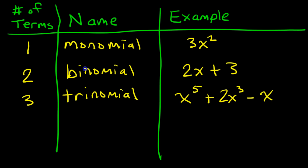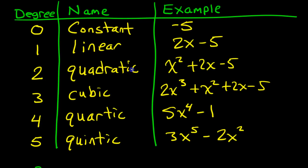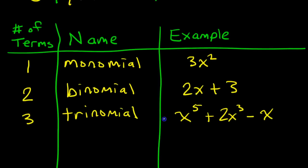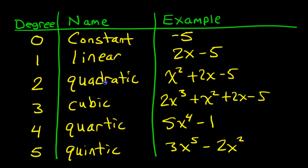By the way, you can put these names together. We talked about names according to degree, and we talked about names according to the number of terms. So this is a monomial, but because the degree is 2, I could call it a quadratic monomial. This is a trinomial, so this is a quadratic trinomial. This is quartic because the degree is 4, and it's a binomial because it has two terms, so I could call it a quartic binomial. This is a quintic binomial. This is a linear binomial, and this is a constant monomial because it only has one term.